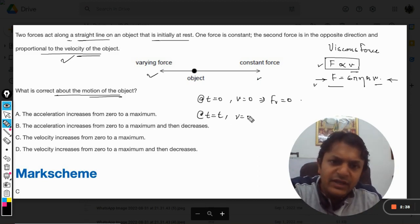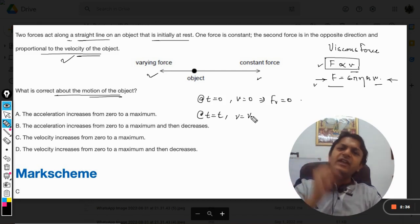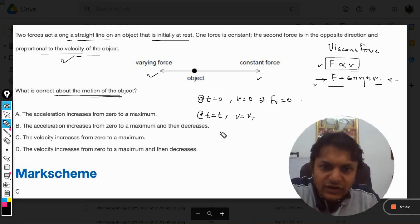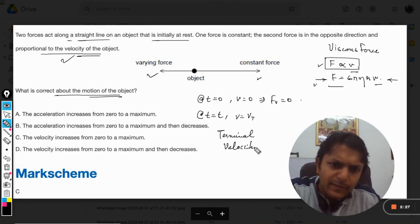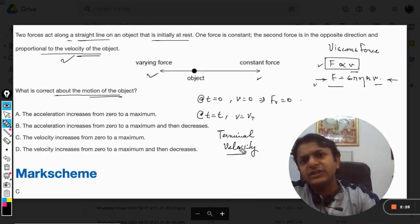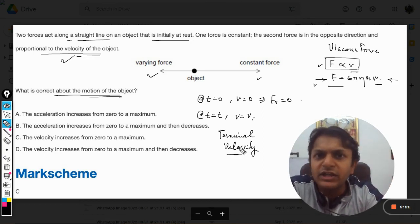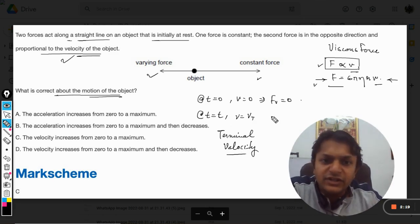the velocity will be equal to a specific value of the velocity which is known as terminal velocity. Now what is this terminal velocity? It is the final velocity that will be attained by the body and at this velocity, the viscous force becomes equal to the applied force.